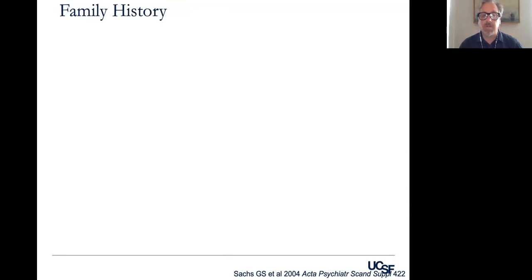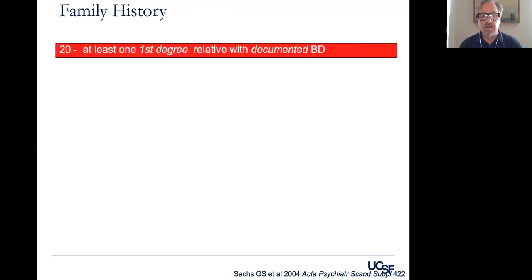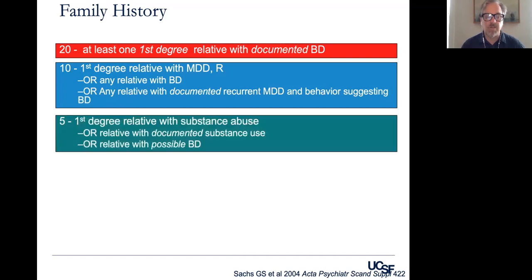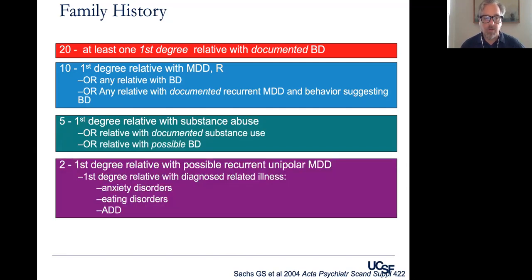Then, really importantly, we want to look at family history. We look at first-degree relatives — mom, dad, brother, or sister — and anybody who has documented bipolar disorder increases the likelihood that our patient might have bipolar disorder. Families with a lot of recurrent major depression could potentially represent underdiagnosed or misdiagnosed bipolar disorder. Sometimes you'll see families full of substance abuse — because substance abuse is so comorbid with bipolar disorder, what was actually happening may be that many of those folks had bipolar disorder. And recurrent major depression in family history also scores here.